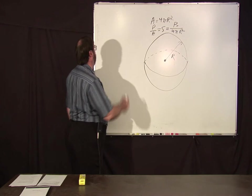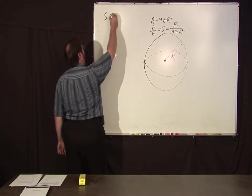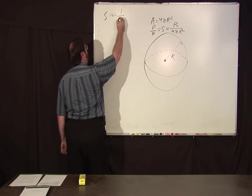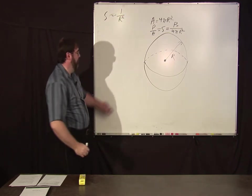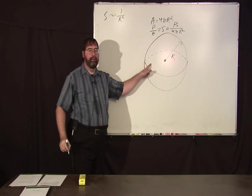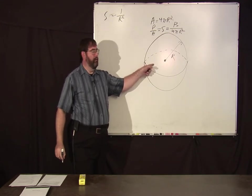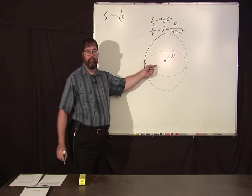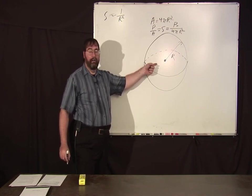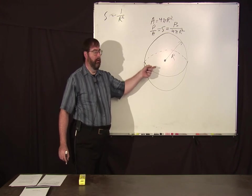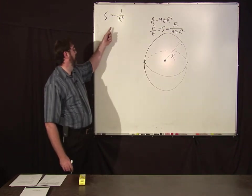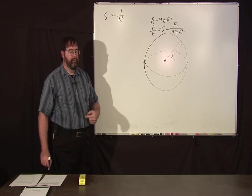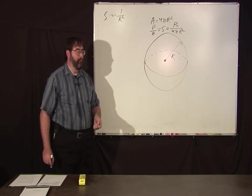But the important thing is this power per unit area is proportional to one over r squared. Well, power in electromagnetics or acoustics, in the case of electromagnetics you got electric fields or magnetic fields, and acoustics you have pressure. The power is proportional to either the field squared or the pressure squared.